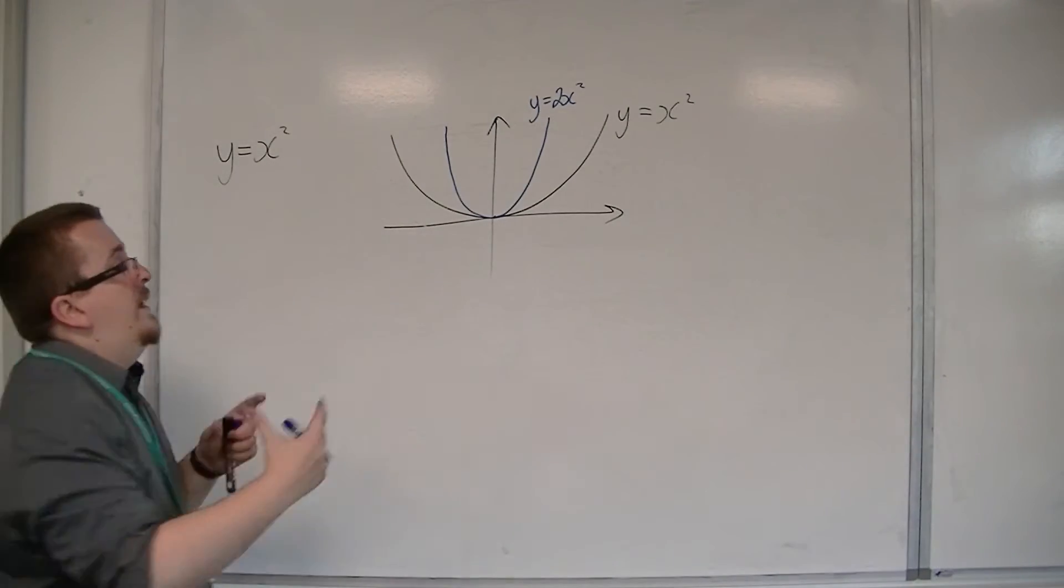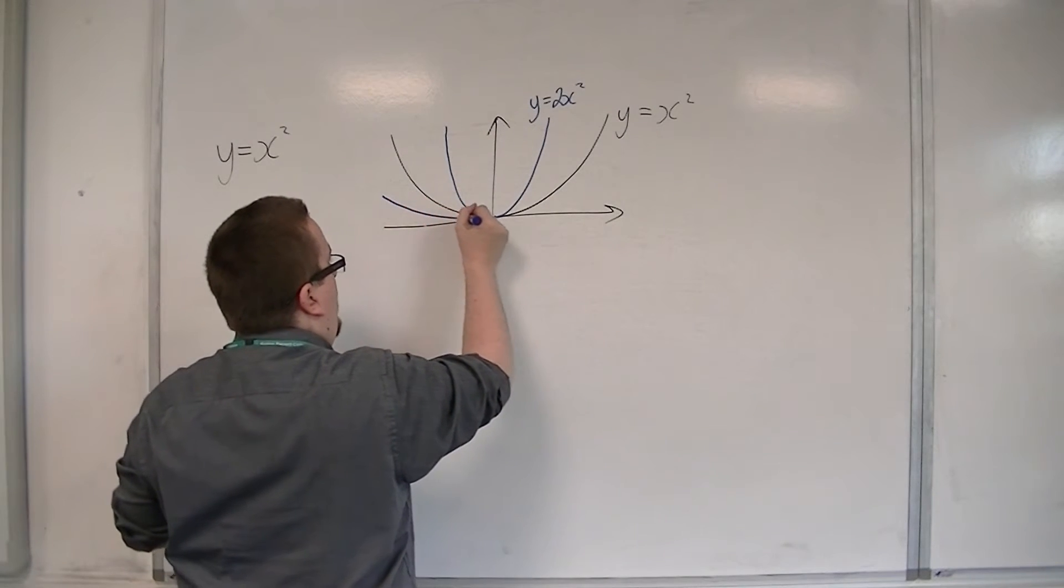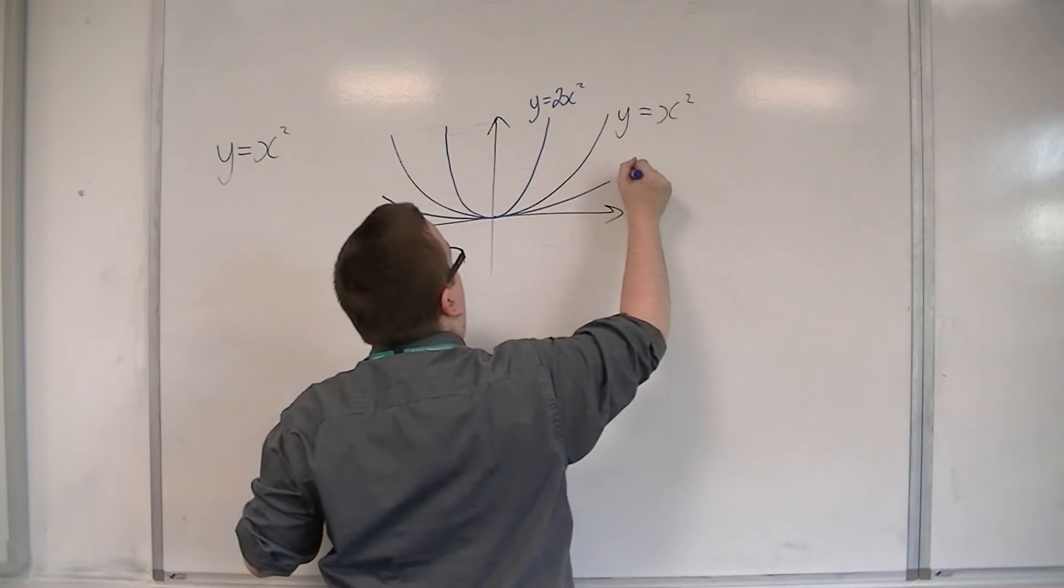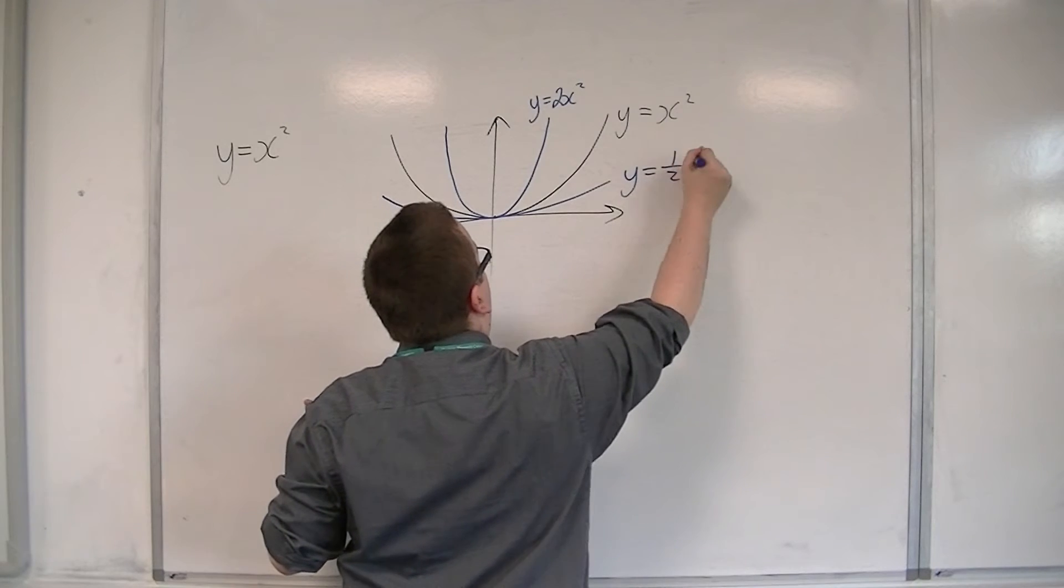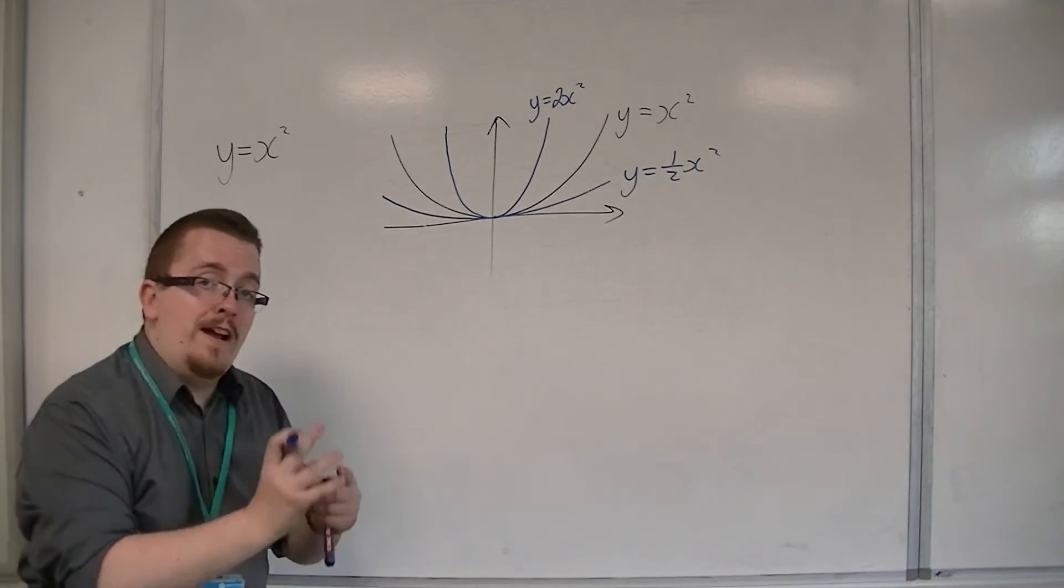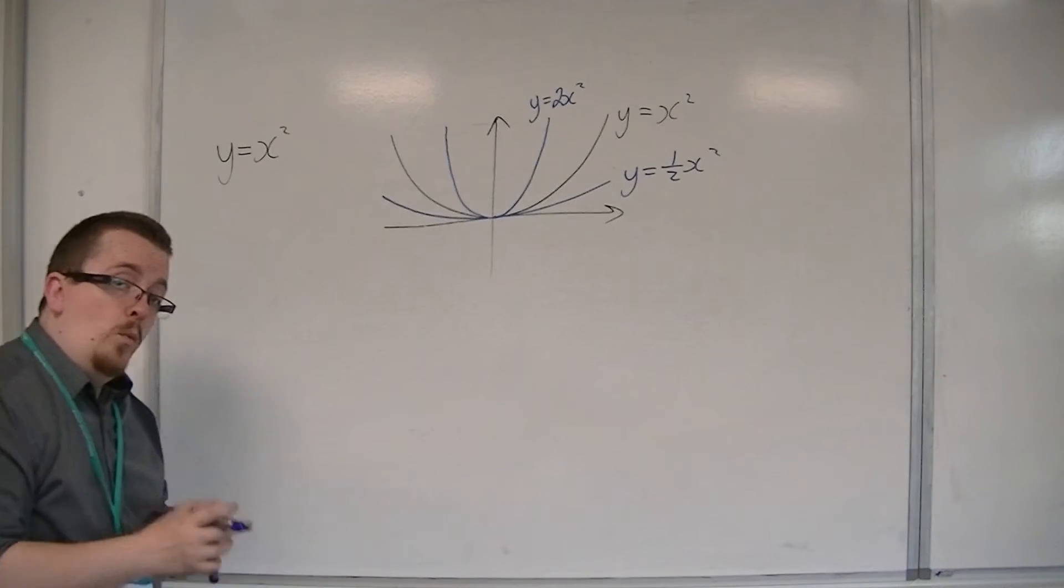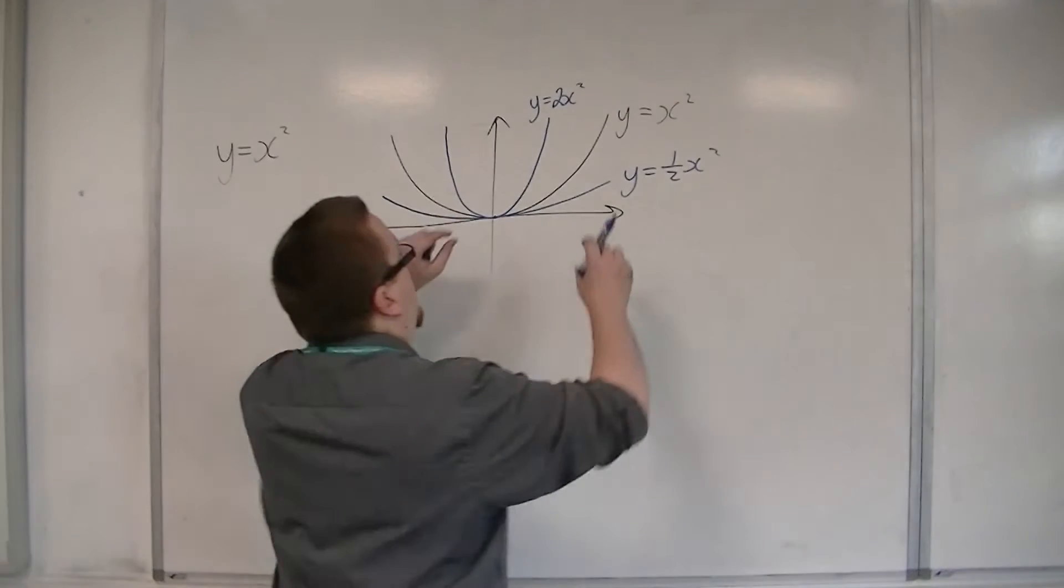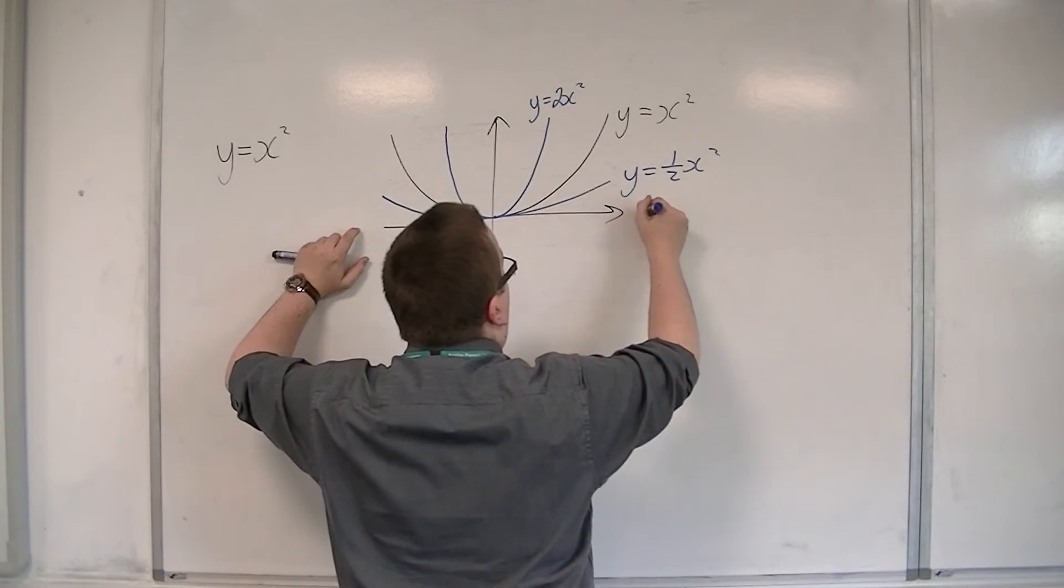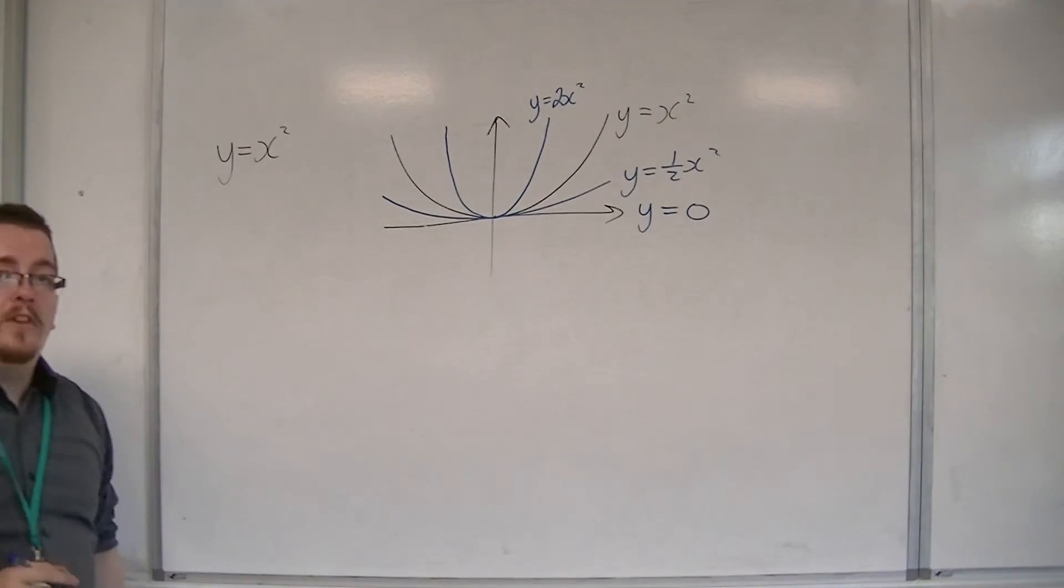If this is y equals x squared, then y equals one-half x squared would look something like that. And slowly but surely, as that fraction gets smaller and smaller—one quarter, one eighth, one hundredth—it gets closer and closer to this straight line, y equals 0.